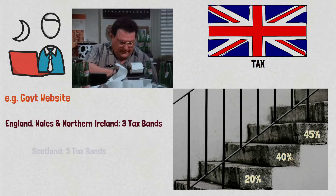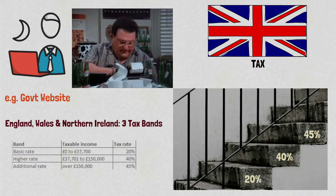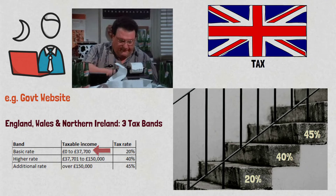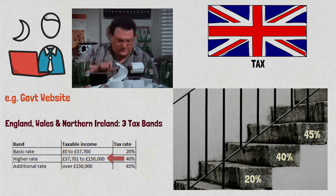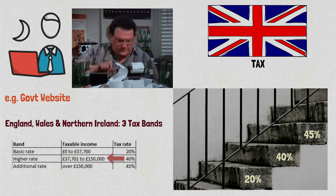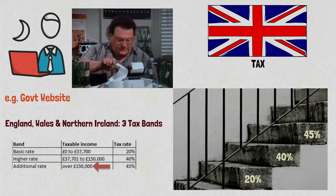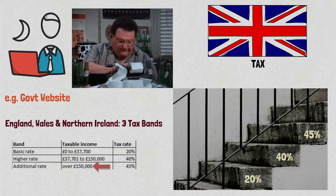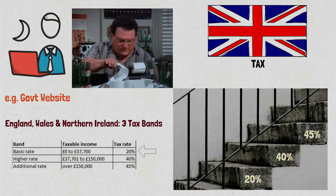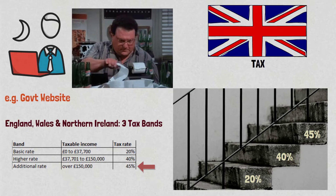These rates differ if you earn in Scotland, but we'll leave that aside for now. The first band is £0 to £37,700. The second band is £37,701 to £150,000, and the third and last band is anything above £150,000. Now each of those bands are taxed at higher rates — this is known as a progressive tax system, meaning the more you earn the more tax you pay.